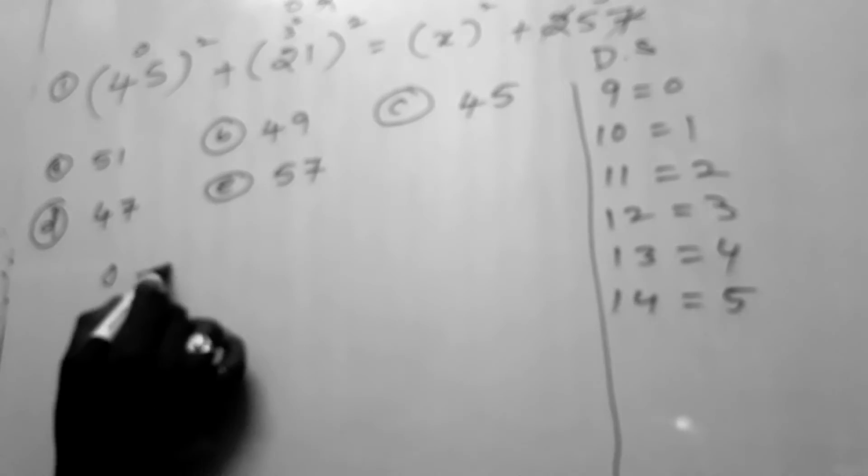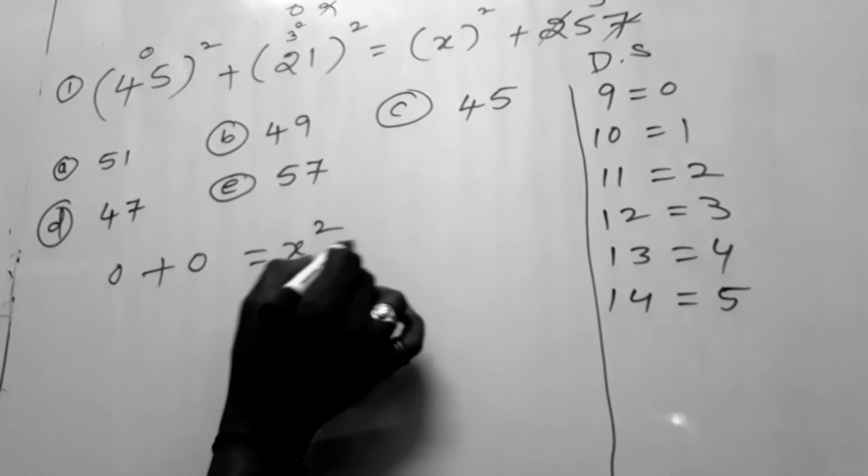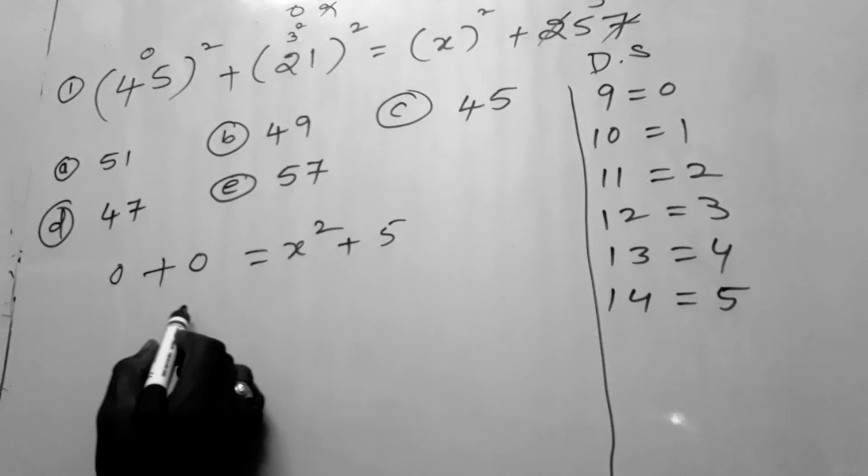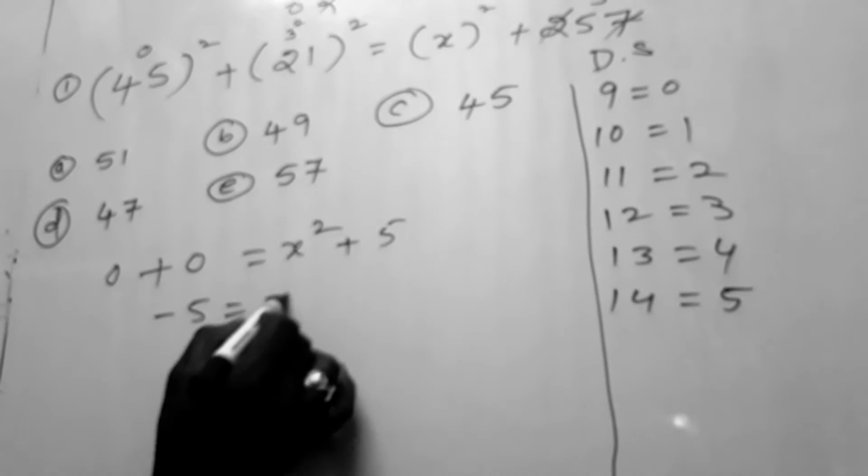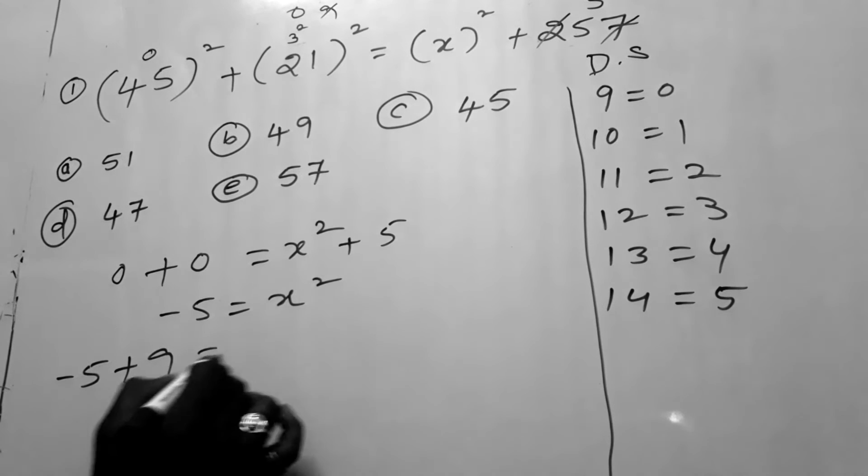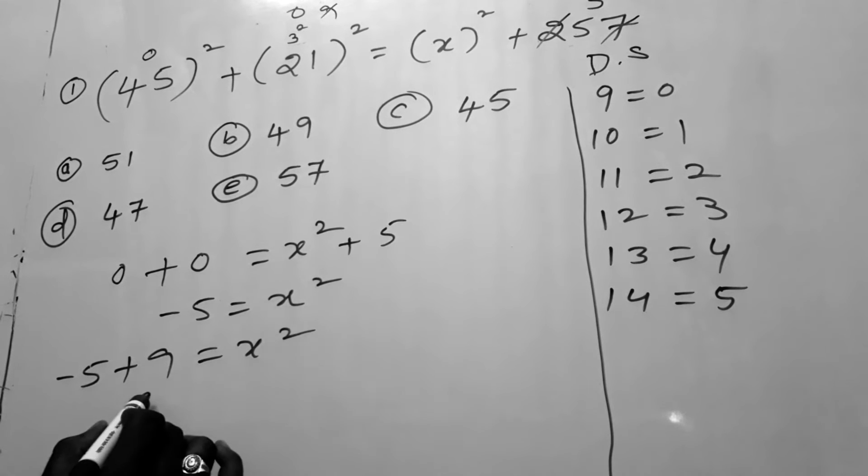0 plus 0 plus x square is equal to, sorry, x square plus 5. Bring this 5 to left side, it becomes minus 5. x square is equal to minus 5. Whenever you get negative digital sum, add 9 to it, it will change into positive.